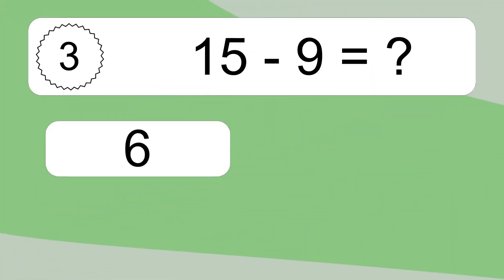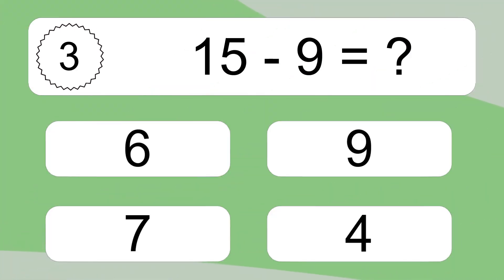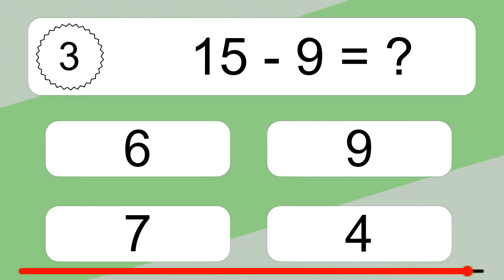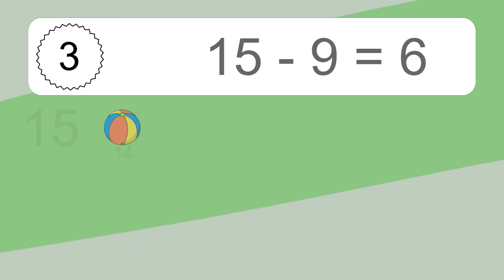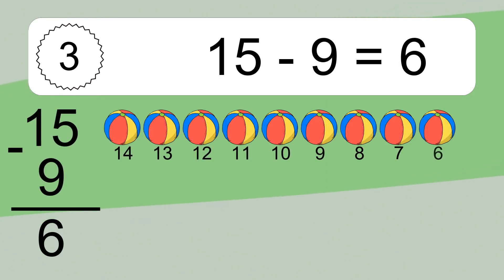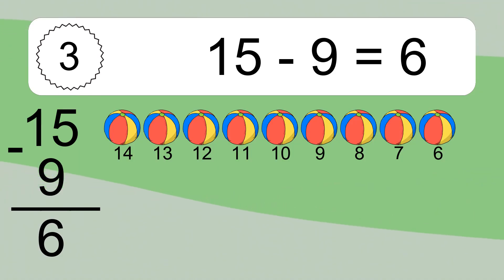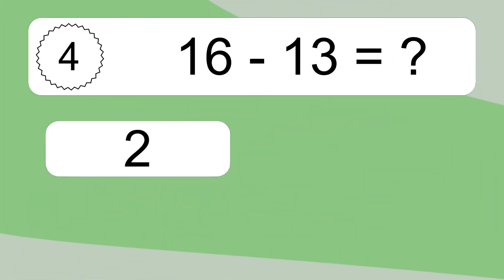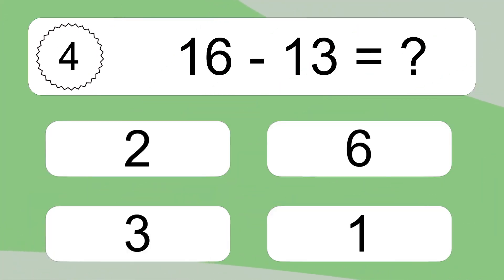15 minus 9 equals what? 15 minus 9 equals 6. Let's count it. 14, 13, 12, 11, 10, 9, 8, 7, 6.